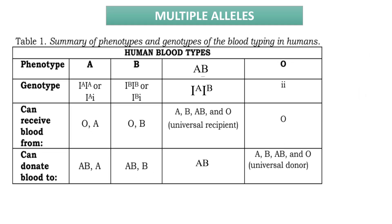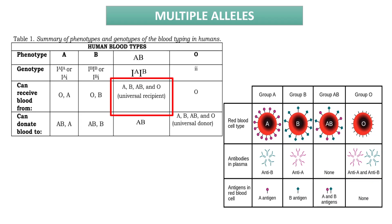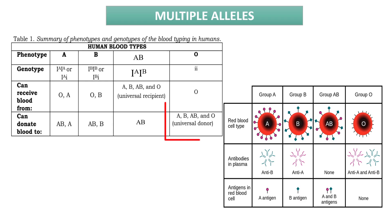Blood type AB is called the universal recipient because people with blood type AB lack antibodies to both A and B antigens. They don't have the antibodies that would cause a transfusion reaction with type A, B, AB, or O blood. On the other hand, blood type O is considered the universal donor because blood type O doesn't have A or B antigens on their red blood cells, so they will not be attacked by the antibodies of someone receiving a transfusion.